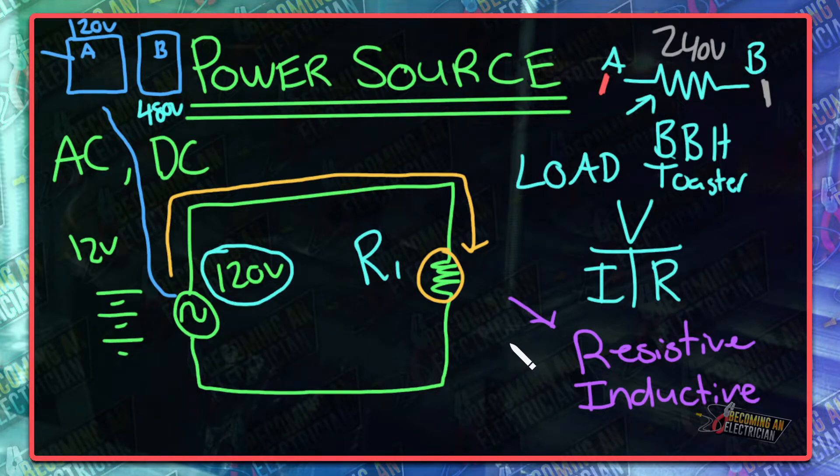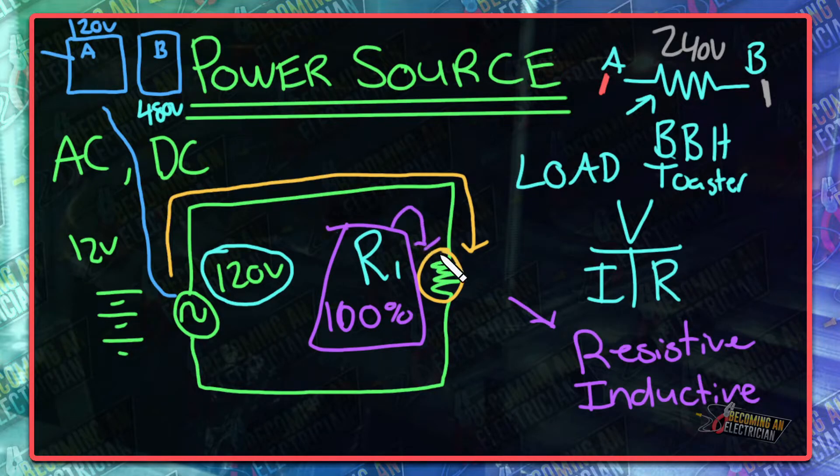But what I want to say is when we have purely, so 100% purely resistive load. If this load right here is 100% purely resistive, and what does that mean? That is something that's like a heating element, a baseboard heater, a toaster, something like that.